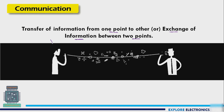Here you can see two persons communicating with each other with some conversation going on between them. There is a thread in between these two — this can be a wire if it is wired communication, or it can be air if it is wireless communication. These are the kinds of medium we use between the two points for communication.